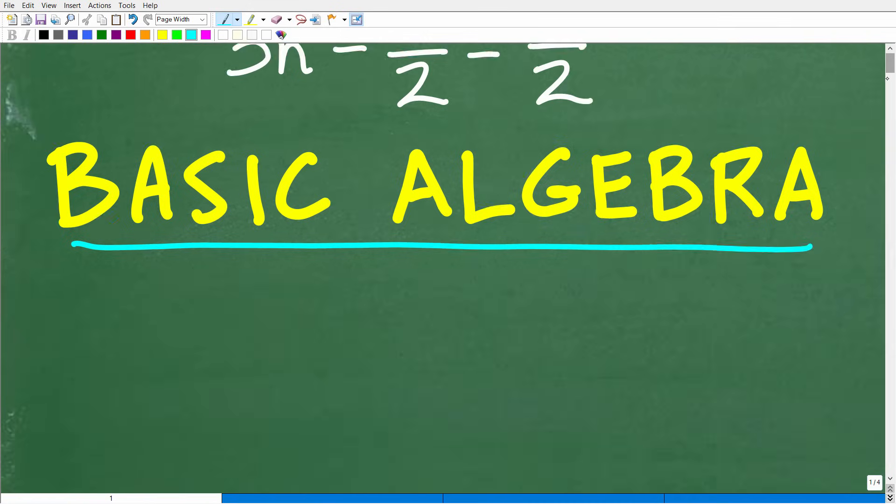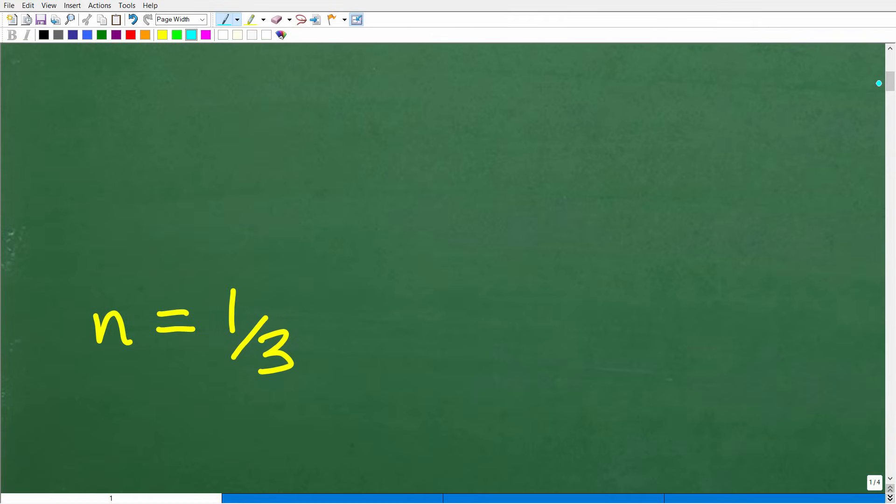So 3n minus 1 half is equal to 1 half. What's n equal to? Well, here it is. n is equal to 1 third.